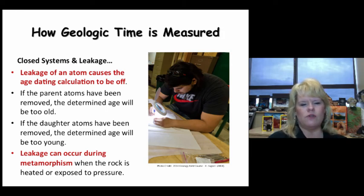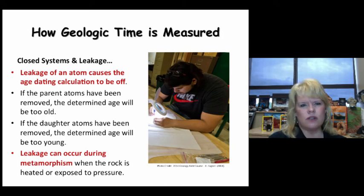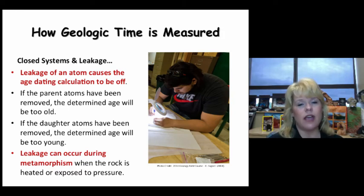If the daughter atoms have been removed, the determined age will be too young, and if the parent atoms have been removed, the determined age will be too old. Leakage can occur during metamorphism, extreme heat, pressure, or contamination. So we want to be sure that we keep a closed system with no leakage of atoms during the analysis.